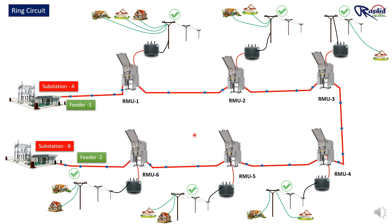Each RMU connects to a transformer that serves its designated load area. The RMUs are connected in a ring or loop, meaning if there is an issue in one part of the feeder, power can be redirected through the other side of the loop. This ring configuration provides a backup path for electricity, so if one part of the loop fails, the system can still supply power from the other side.